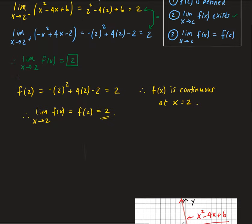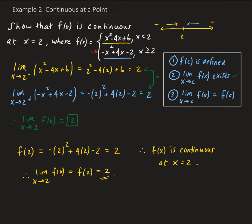Whenever you have piecewise functions, you have to be really careful. You need to check what's happening at the boundary — there could be a jump, or maybe a hole with the other part shifted down. So we have to be careful with these types of functions, particularly piecewise functions. This is how you show a function is continuous at a point.